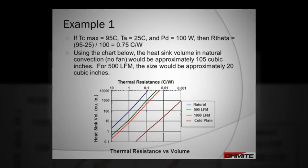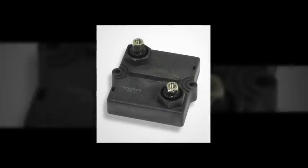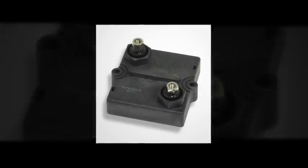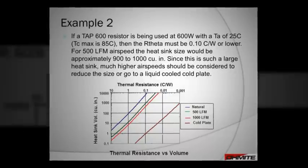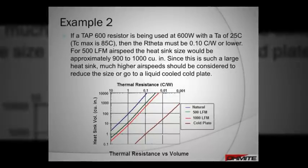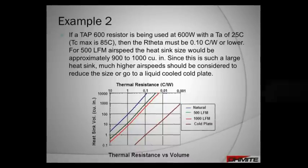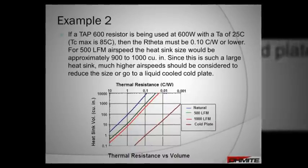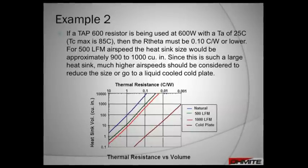For the second example, we will apply this concept to an Ohmite TAP600 resistor. The values for this resistor series are used in the equation: maximum case temperature of 85 degrees Celsius, ambient temperature of 25 degrees Celsius, and wattage dissipation of 600 watts. A large heat sink would be required for this wattage dissipation.